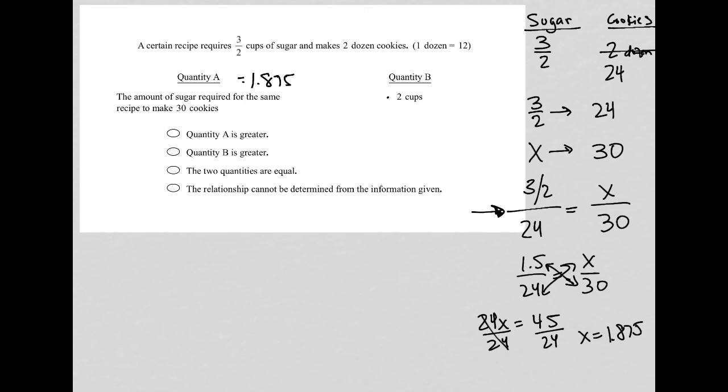Quantity B is two cups, which means quantity B is greater than quantity A. Therefore, our answer is the second option.